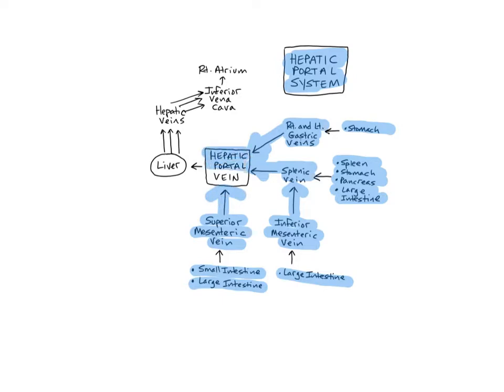And the star of the show, the hepatic portal vein, is a large diameter vein that collects all of the drained blood from the GI organs and spleen and delivers it into the sinusoidal capillaries of the liver.